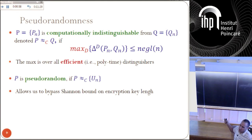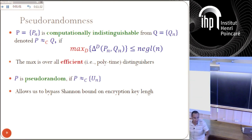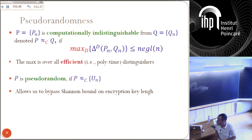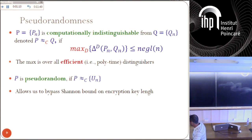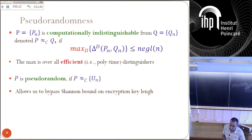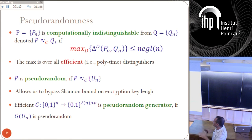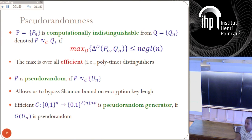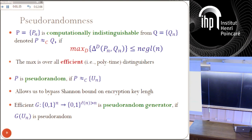Pseudo-randomness is one of the fundamental key notions in cryptography and leads to a large part of theoretical computer science. In particular, it allows us to bypass the Shannon bound on encryption key length. A pseudo-random generator is simply an efficient algorithm that increases input length, and still its output on a uniform input is pseudo-random. This is called a pseudo-random generator — its output is pseudo-random even though it's definitely not random, because its entropy is determined by the input length.